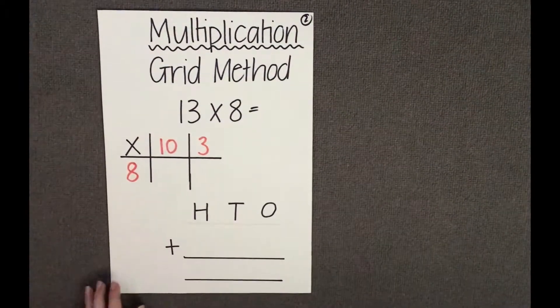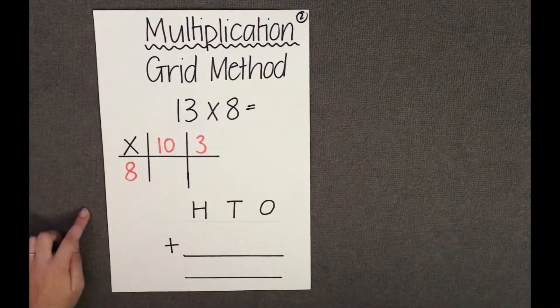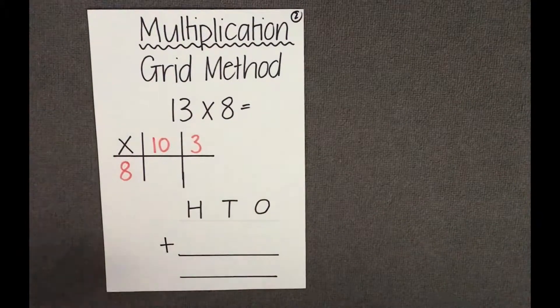Next we need to use our grid to multiply our numbers. First we multiply our tens. 8 times by 10 which we know is 80.